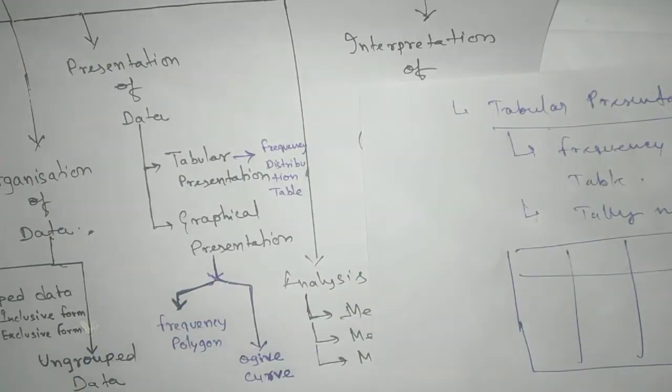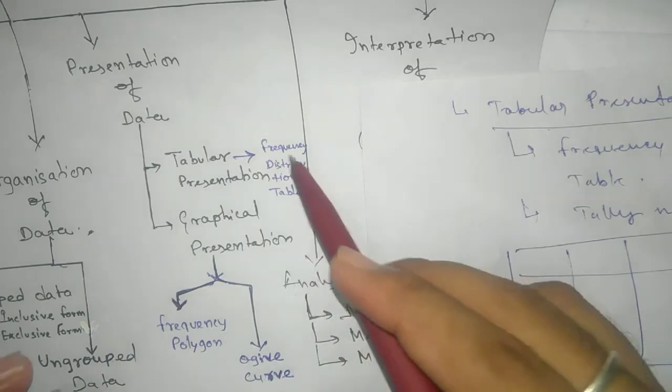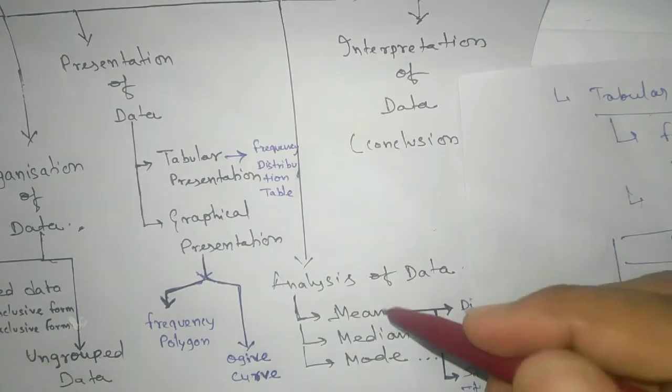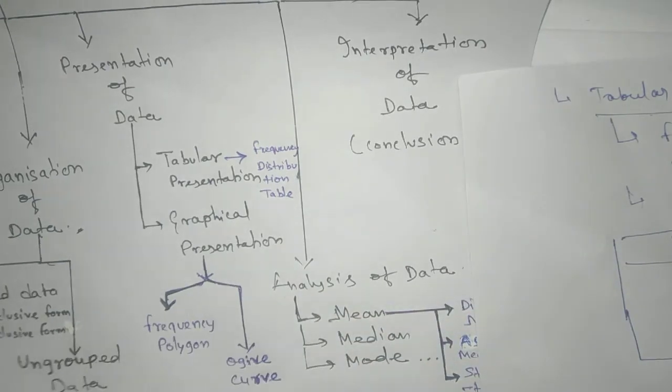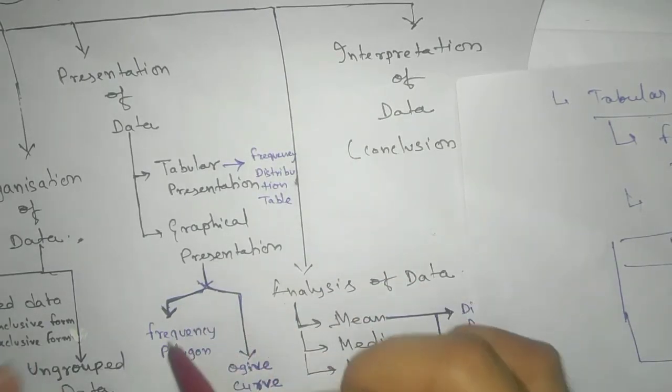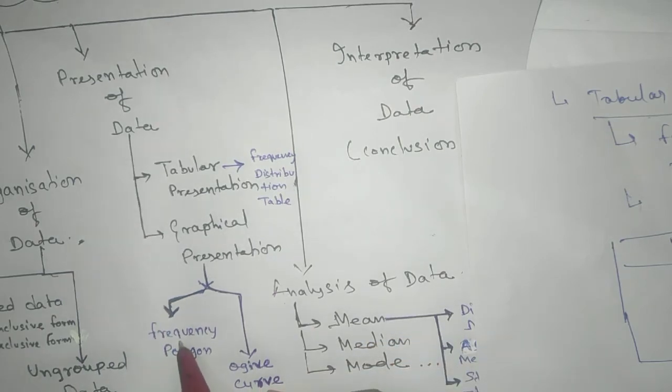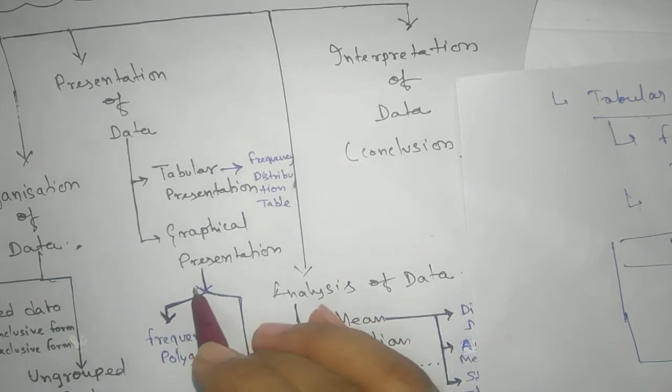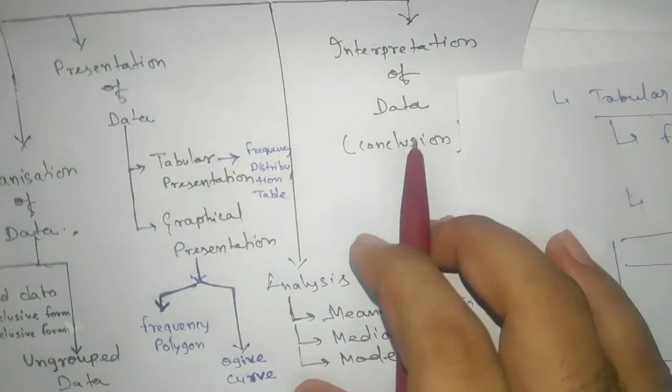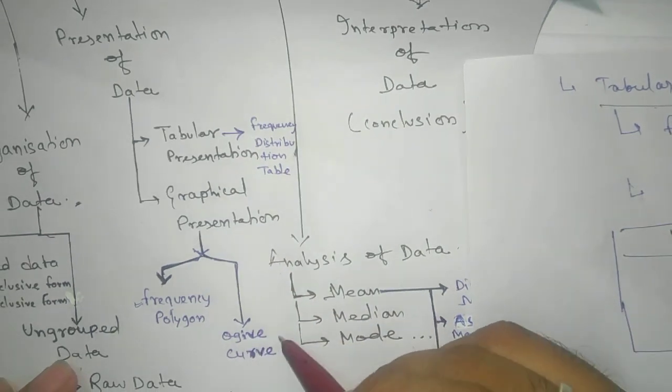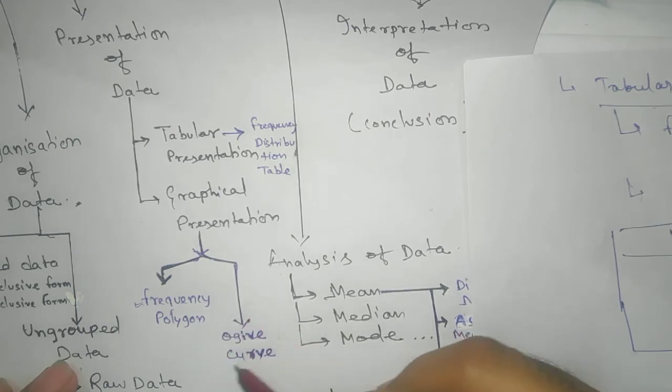Now second one is graphical presentation. The graphical, after completing your tabular part, after analyzing the data, need to keep this one in graphical presentation. Right now class nine have frequency polygon, histogram, bar graph, and pie chart were there in class eight or seven. Right now this one histogram and frequency polygon. For class ten we have ogive curve. And for median only this one we have.